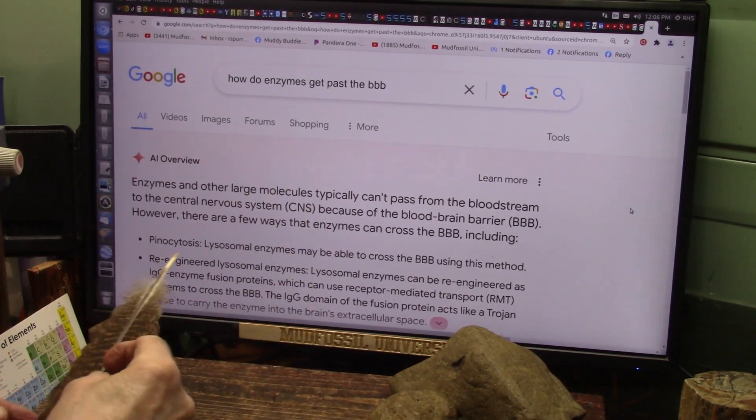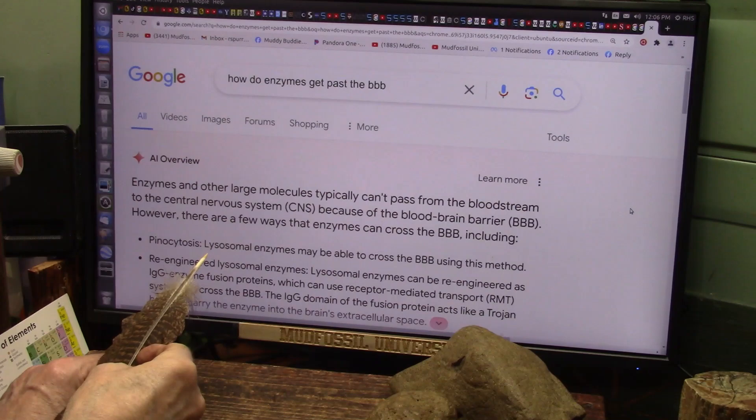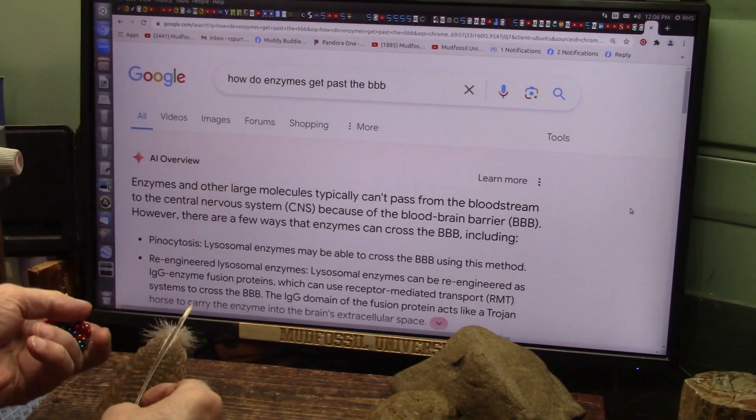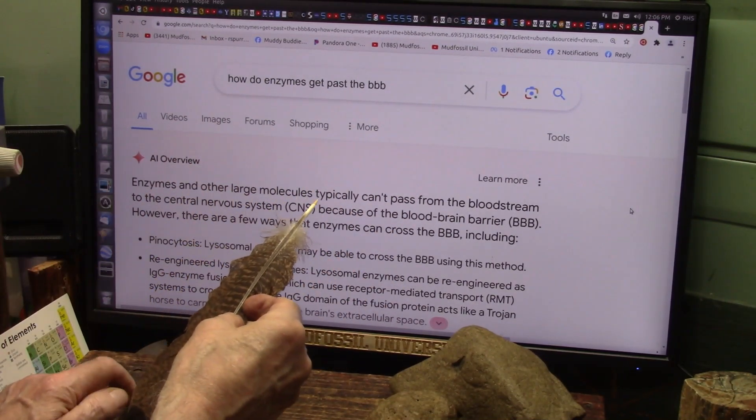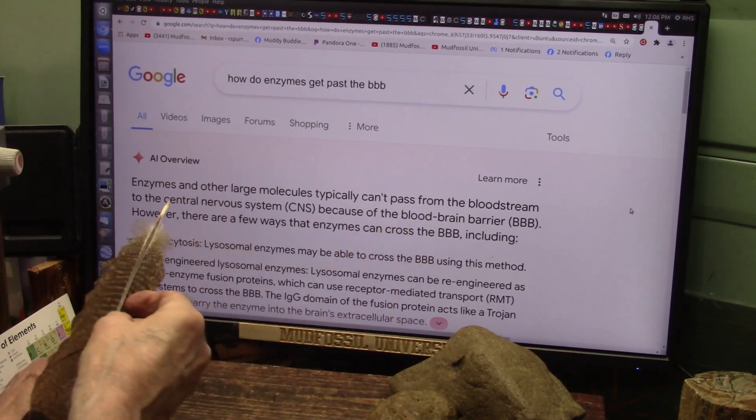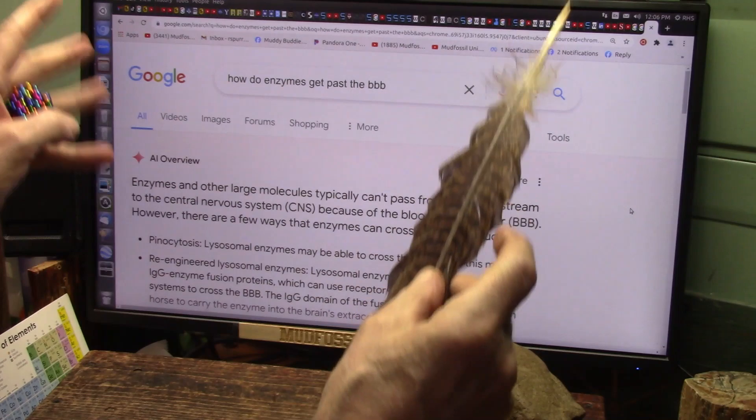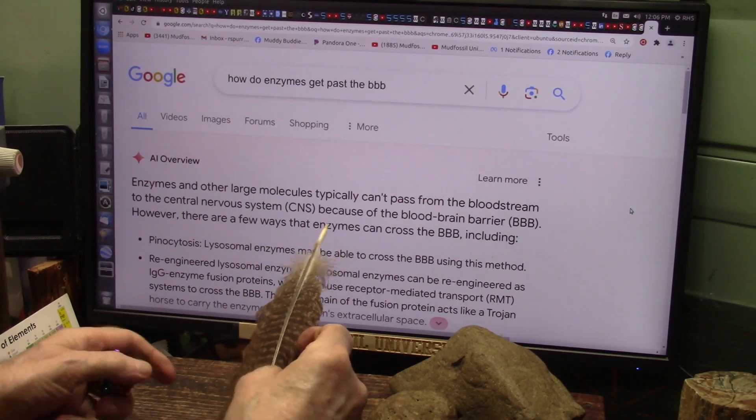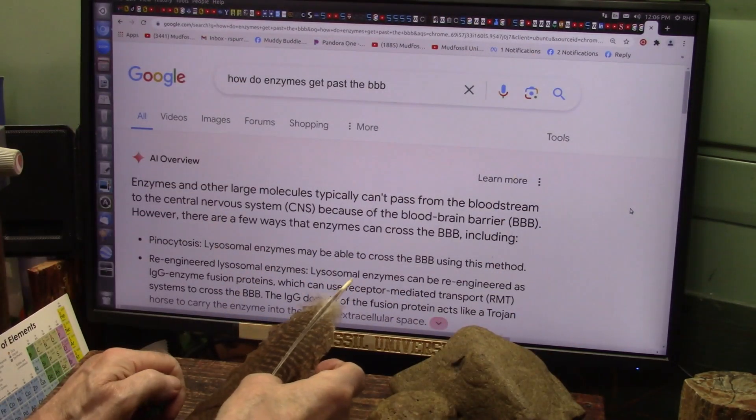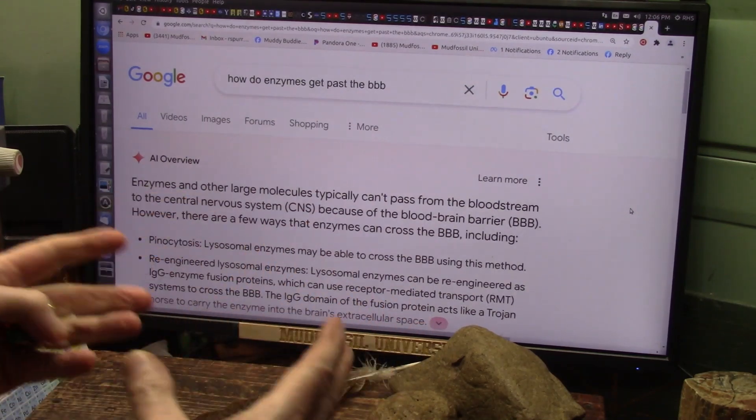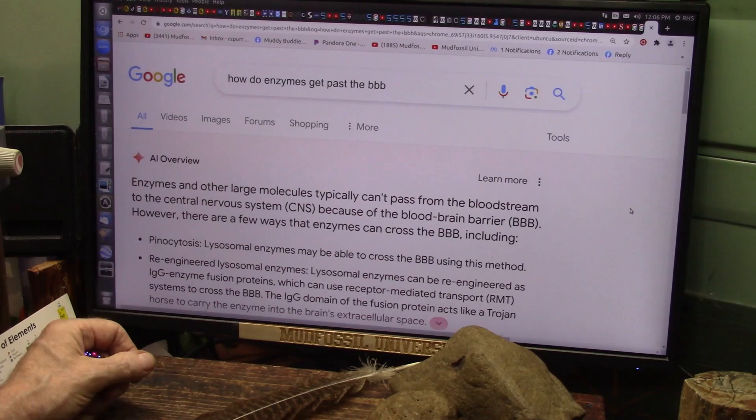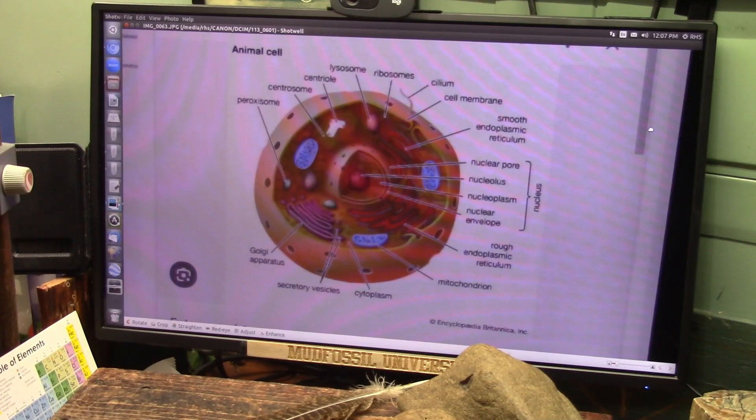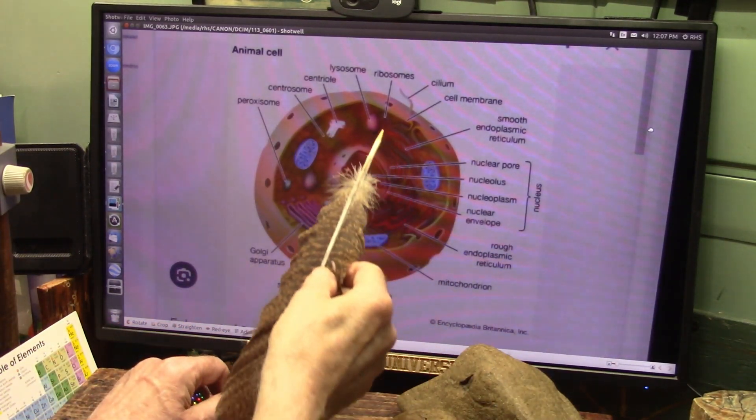If the doctors know how this works, they make it so confusing you can't understand it. Lysosomes do create the enzymes within cells, but how did the enzymes get there in the first place? Enzymes are too big. Enzymes and other large molecules typically can't pass from the bloodstream to the central nervous system. Your brain doesn't want all these big things floating around. The blood-brain barrier is too restrictive. So how do the enzymes get up there? How did the enzyme get there if it can't pass the blood-brain barrier?